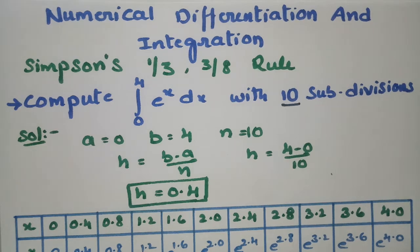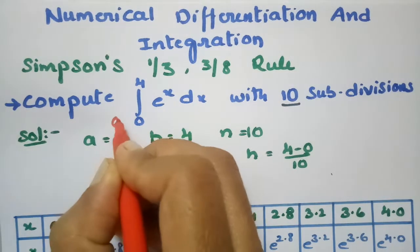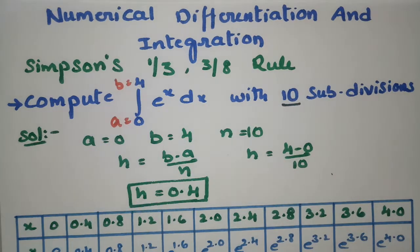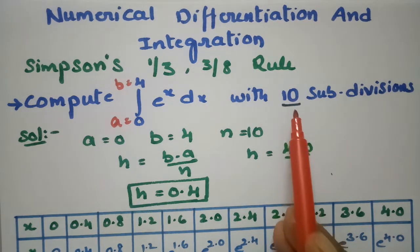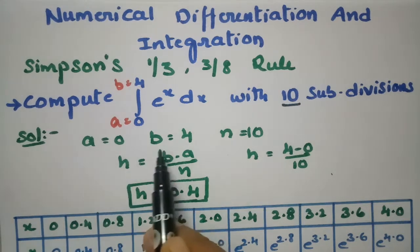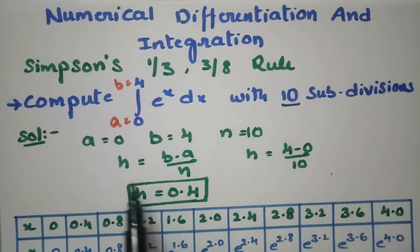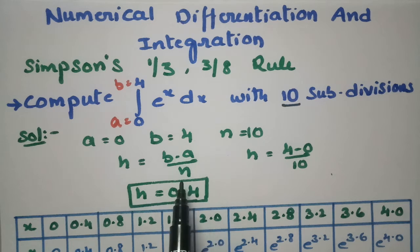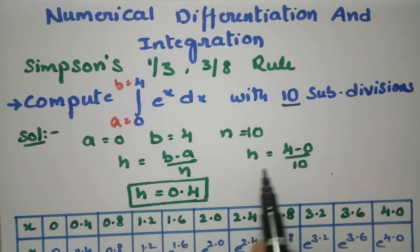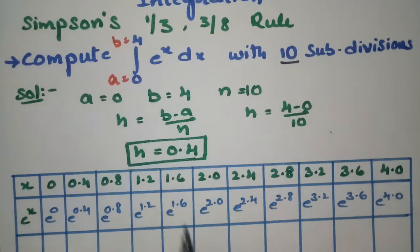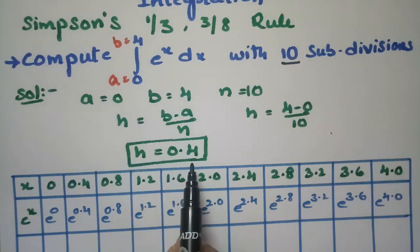Here n is equal to 10. It is very clear from the question that a is equal to 0 and b is equal to 4, and n is equal to 10. So what is our h value? h is nothing but (b minus a) divided by n, which is (4 minus 0) divided by 10, equal to 0.4.